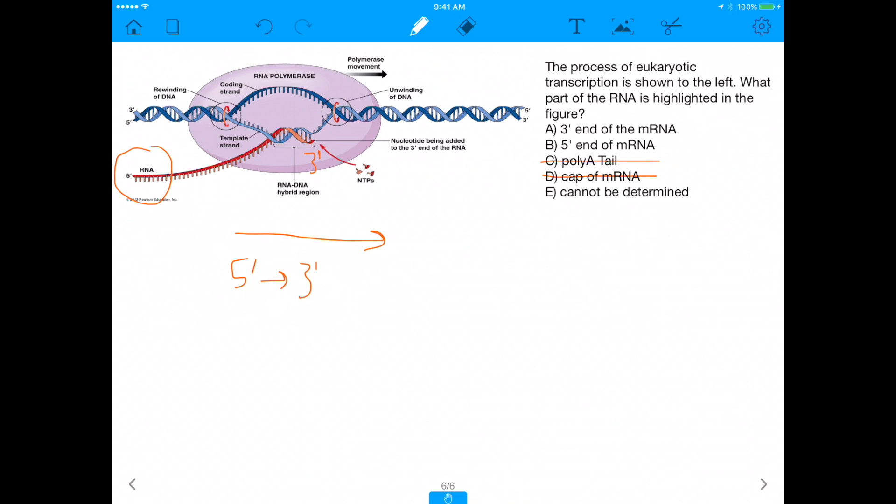this has to be the 3' end because it adds things onto the 3' end. But this right here, the part that was highlighted, has to be 5', okay? And therefore, the part that's highlighted is the 5' end of the figure, and the answer is B.